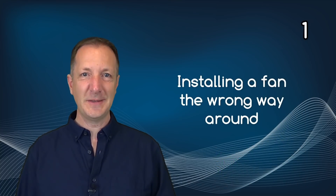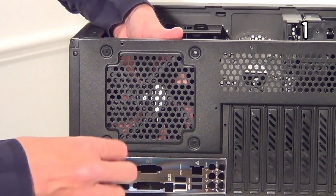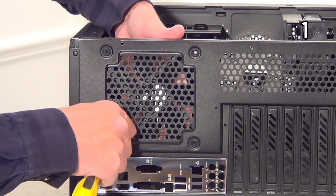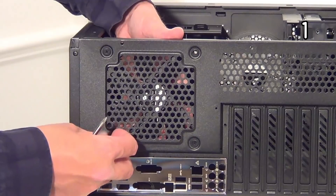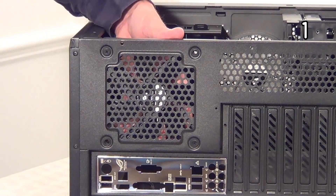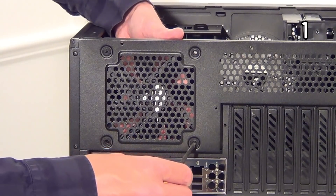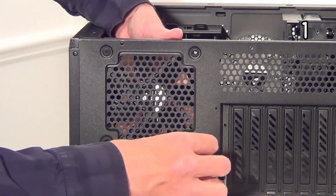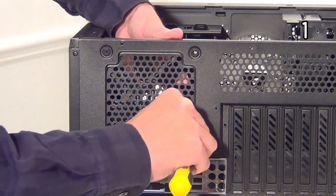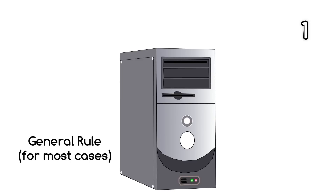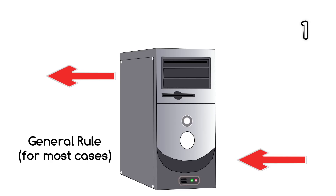Number one: installing a fan the wrong way around. Many of us have done this at one point or another — you install a fan only to realize you've put it in the wrong way round, but this is often no problem. Just check the fans and correct any that are facing the wrong way. The general rule is air should be blowing in at the front of the computer case and blowing out at the back. Some cases allow air to blow out at the top as well.